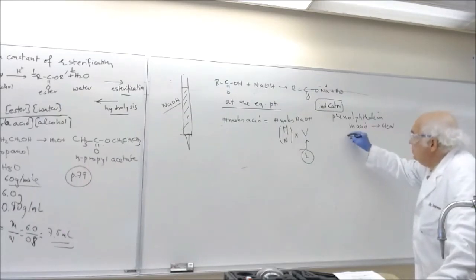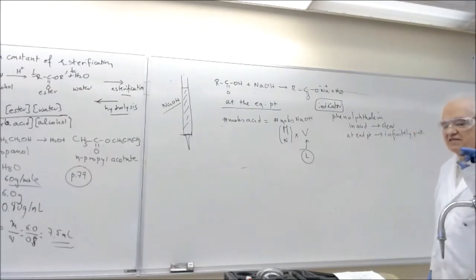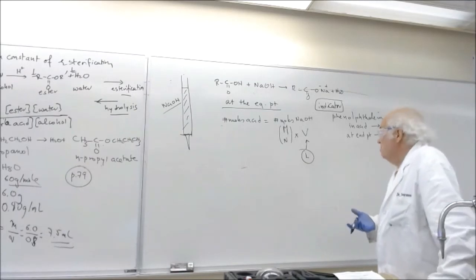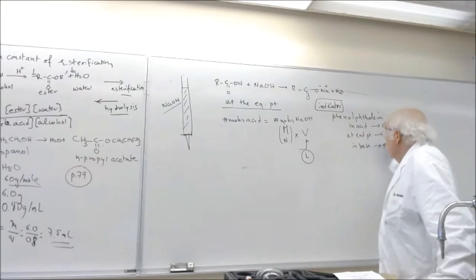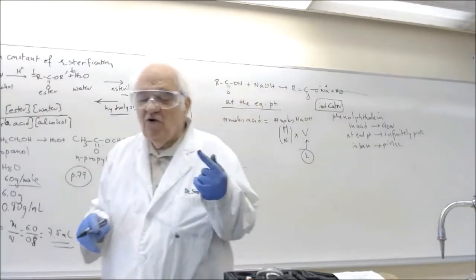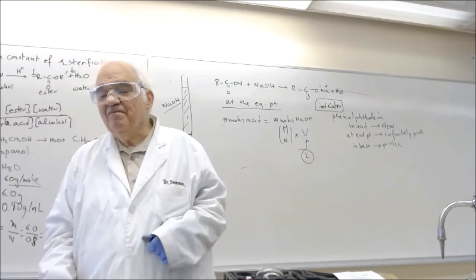At end point, it's infinitely pink. Infinite pink means that it is completely, you can hardly see it. And that's why when you perform titrations, I always suggest that we have a piece of white paper under it. In base, it's pink. Your job is not to make the solution pink. Because whether you add one drop extra, or you add 10 liters extra, the color is still going to be the same.